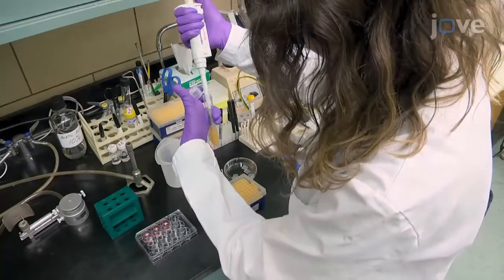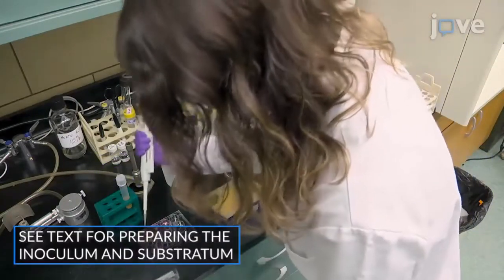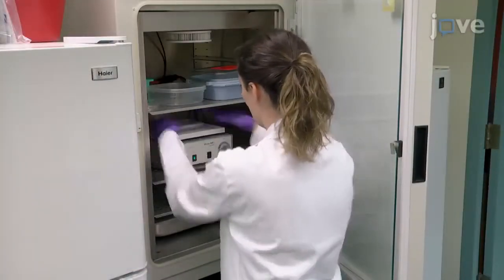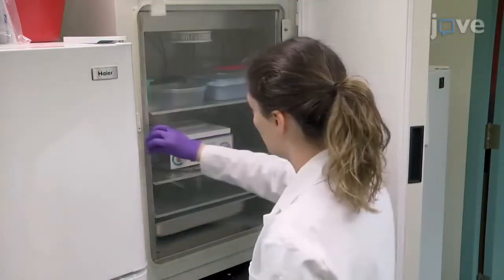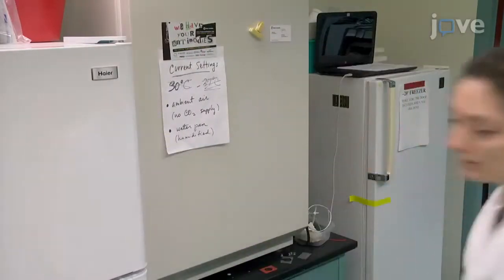To begin biofilm growth in a 12-well plate, prepare the plate as described in the text protocol. Place the plate on a 60 RPM orbital mixer in a humidified 37°C air incubator for 90 minutes to allow time for cell adhesion.